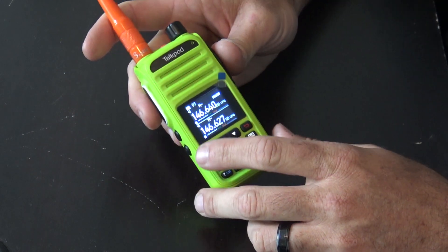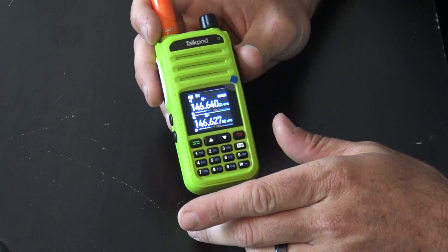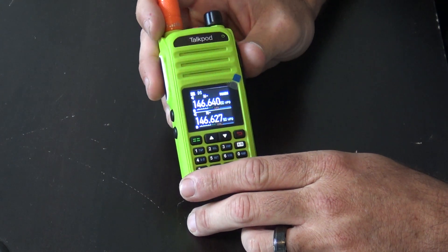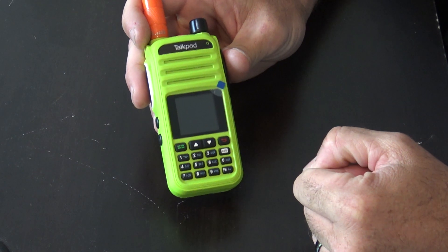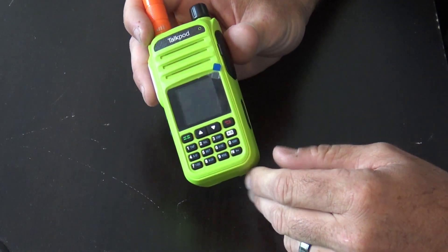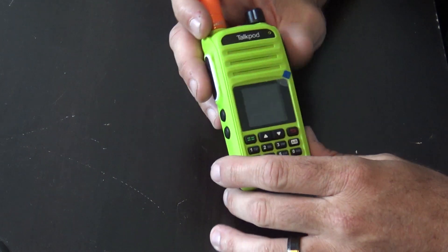Now it talks on 136 to 174 and 400 through 480. It does have air band receive on it as well. For the majority, this is a dual band VHF UHF 5 watt handheld with an IP54 rating, so it could be splashed, maybe out in the rain, not too bad, but not submersible.